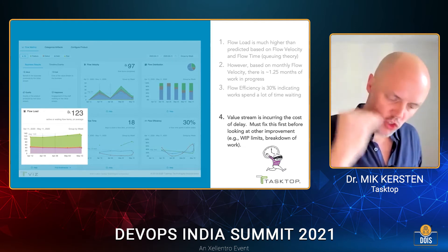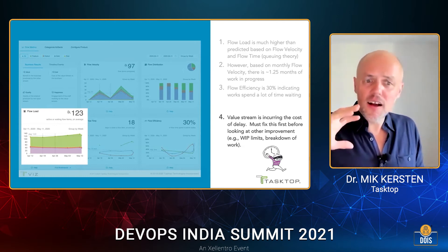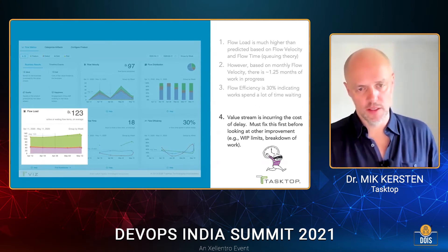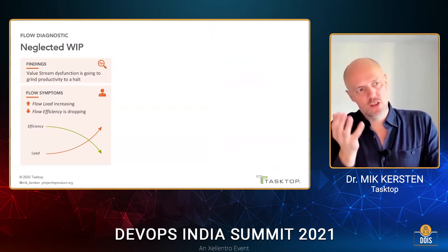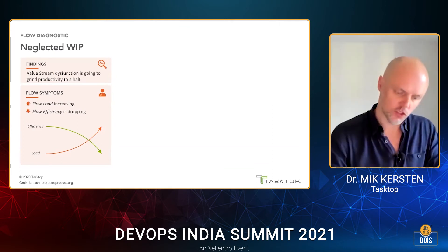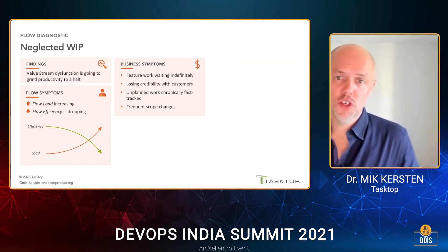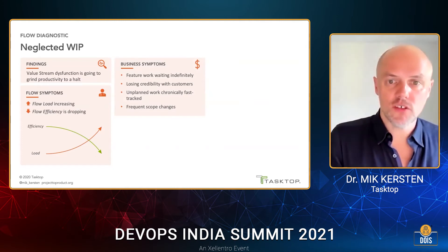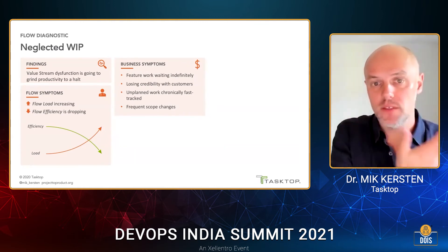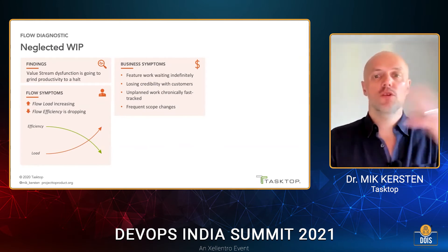Putting in place WIP limits — just reducing the amount of work in progress — is one of Dominica DeGrandis' time thieves: the WIP time thief. Simply reducing the work in progress will improve velocity. We can go back to queuing theory and Little's Law on this. The flow symptoms are that flow load is going up and flow efficiency is dropping. The business symptoms are that feature work seems to wait indefinitely because the teams are getting less and less done, you're losing credibility with customers because you need those features — those were on the roadmap for a reason. When this happens, the teams still need to get some things done, promises have been made, so unplanned work is chronically fast-tracked and you end up with very frequent scope changes, which makes everything much worse.